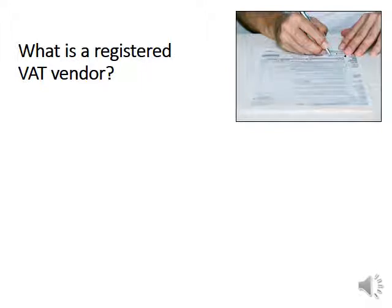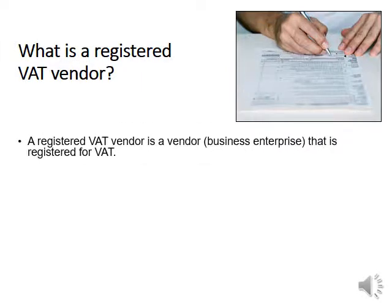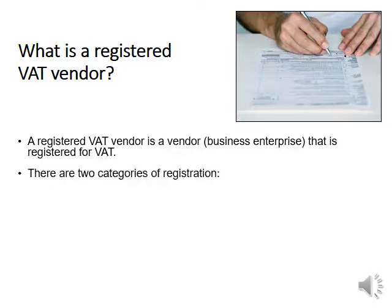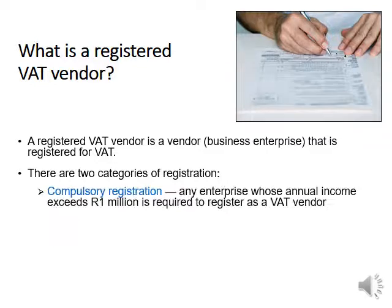What is a registered VAT vendor? A registered VAT vendor is a vendor — a business enterprise that is registered for VAT. There are two degrees of registration. The first one is compulsory, meaning you do not have a choice. Any enterprise whose annual income exceeds more than one million rand per year is required to register as a VAT vendor.